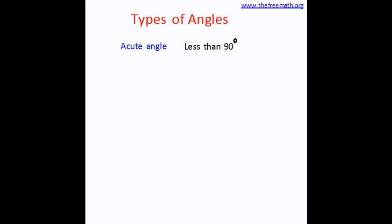The next type is acute angle. An acute angle is something which is less than the right angle, that means it is less than 90 degrees. An angle between 0 degrees and 90 degrees is called an acute angle. It looks like this, or like this, or you can draw it in several different manners.